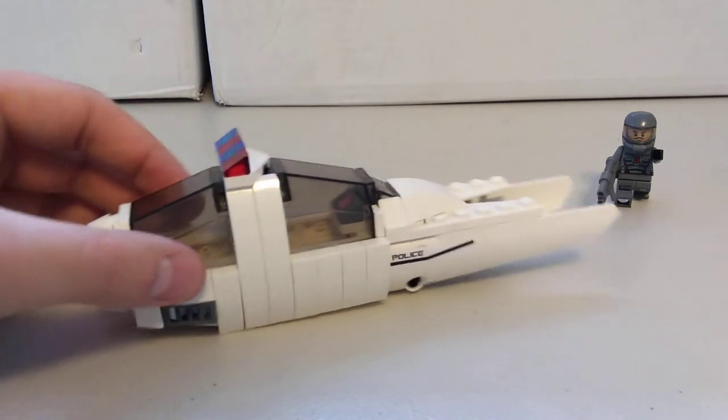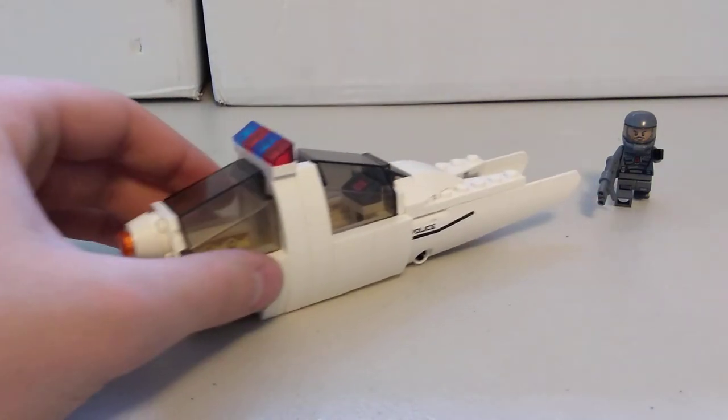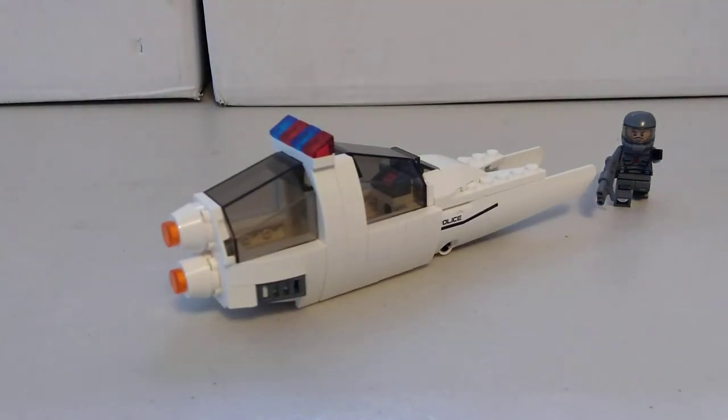On the back here, you can see it's got a couple units propelling it forward here, and then these grille pieces that are indicating some sort of exhaust on the side there.